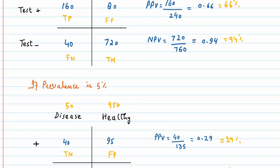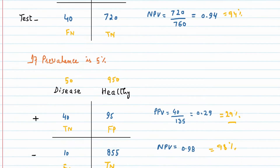We can see that with an increase in prevalence, there is an increase in positive predictive value, while when the prevalence reduces, the positive predictive value also reduces, while the negative predictive value increases with decrease in prevalence.